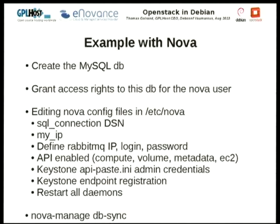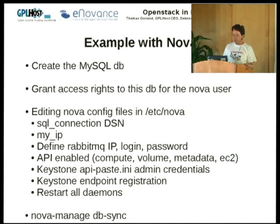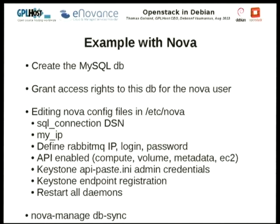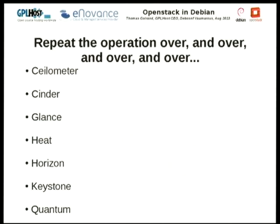For Nova, you create the SQL database, grant access rights to it, edit the SQL connection directive in the configuration file, define the RabbitMQ IP, login, and passwords, then configure it so that the Keystone token goes to Keystone. Then you invoke nova-manage db_sync, which populates the database with tables and content. Once you've done that with Nova, you have to do the same for Ceilometer, Cinder, Glance, Heat, Quantum, and for packages like Keystone and Horizon.